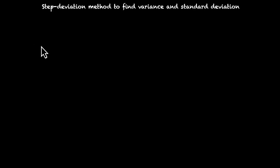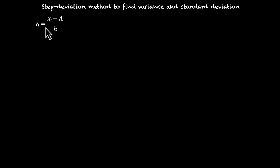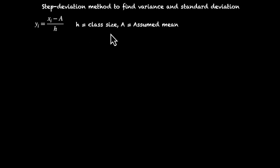The first thing that we do is take the midpoints of the classes to represent them — that's our xi. Once we have that, let's assume our mean to be a, h is our class size, so yi is equal to (xi - a) / h is the substitution that we'll do. We'll have another column for yi right next to xi. We'll subtract the assumed mean from all xi and then divide the difference by h. yi becomes our new variable that we'll work with, so yi = (xi - a) / h.